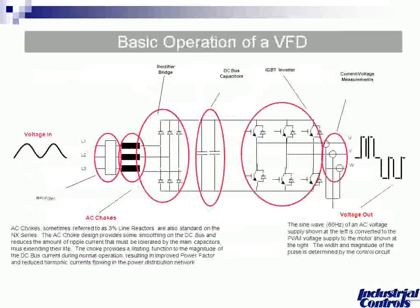Looking at the detailed internal workings: the AC input sine wave goes in. Some drives include an AC choke or line reactor, which is important because it cleans up the voltage coming into the drive. A VFD doesn't create harmonics per se, but if there are harmonics on the line — dirty or fuzzy voltage — it will amplify them and put even more on the line, making bad voltage worse. If that input line reactor is in place, we can clean that up before it even gets in there.